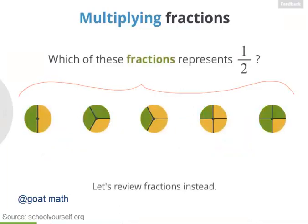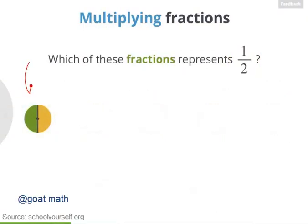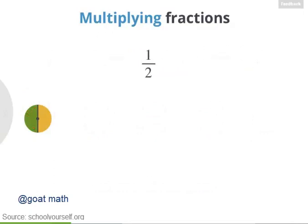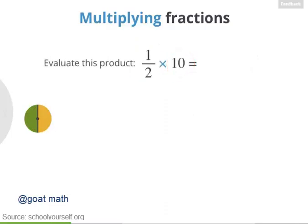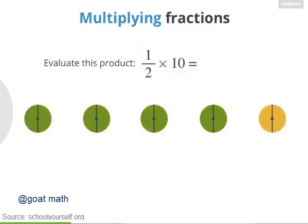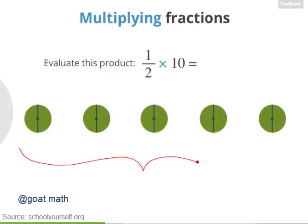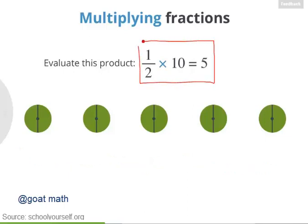Which of these fractions represents one half? We've shaded one half of this dot. Now what happens if we multiply this fraction, one half, by a whole number like 10? One way to think about this is adding up 10 halves. So if we have 10 half dots, how many dots do we have in total? 10 half dots means you have 5 whole dots. So one half times 10 equals 5.